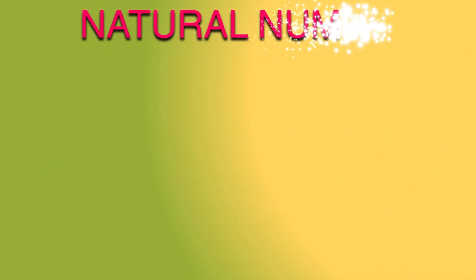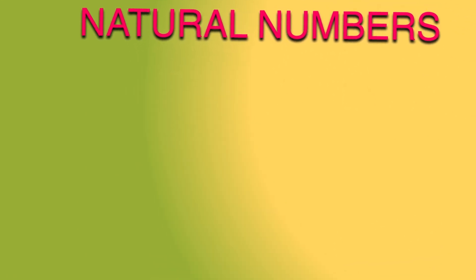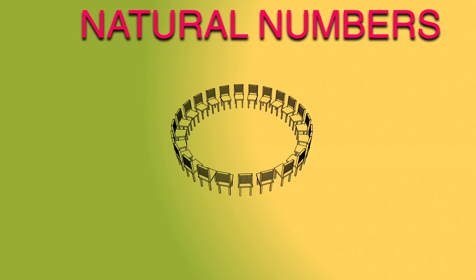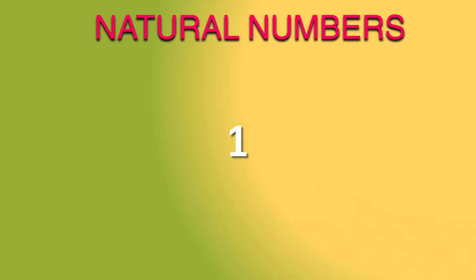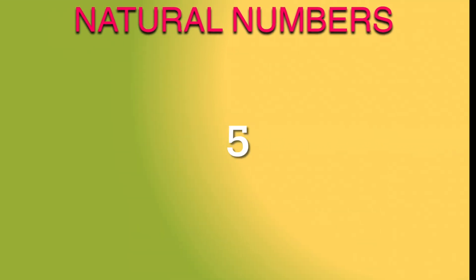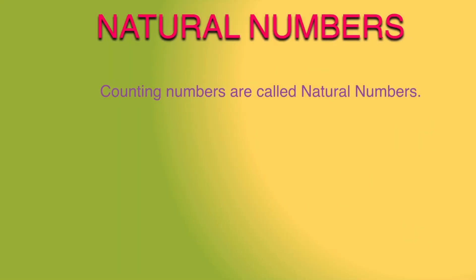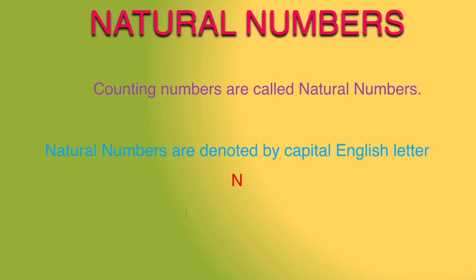First one: natural numbers. To count any objects like books, students, chairs, rice bags, etc., we used to count from 1, 2, 3, 4, 5 and so on. So these counting numbers are called natural numbers. Natural numbers are denoted by the capital English letter N. N = {1, 2, 3, 4, ...} and so on.